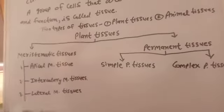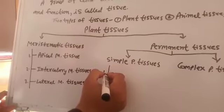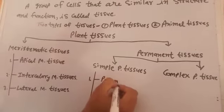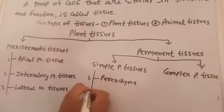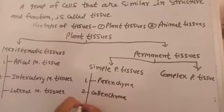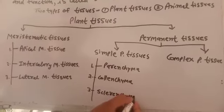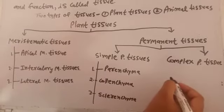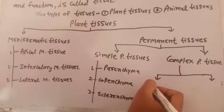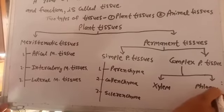Simple permanent tissues are further divided into three types: first, parenchyma; second, collenchyma; and third, sclerenchyma. Complex tissues are further divided into two types: first, xylem, and second, phloem. Thank you.